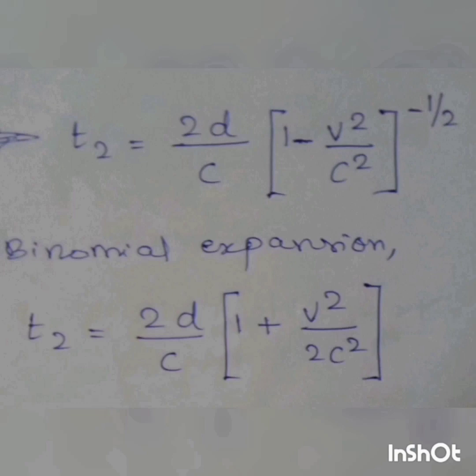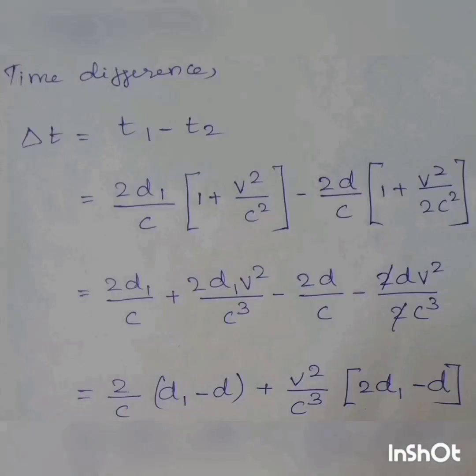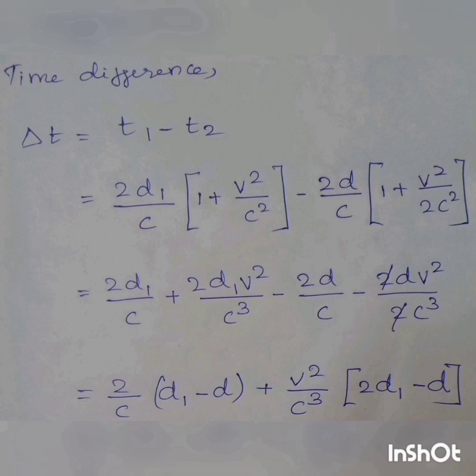Now let's do the two values. This is our goal. This is the binomial equation. The binomial equation is the root of 1 by 2. So, 1 by 2 is minus 1 by 2. That is the binomial equation. Now, we will do the minus. So we will do the path difference and the time difference. The last one is 2 by c times d1 minus d plus v² by c³. 2d1 minus d. So, this is the time difference.